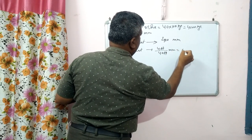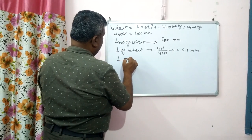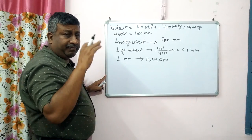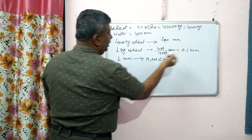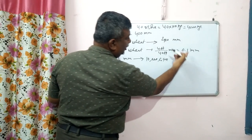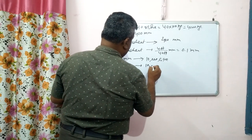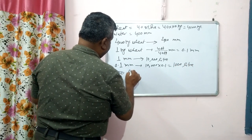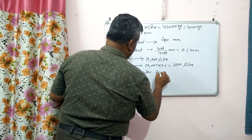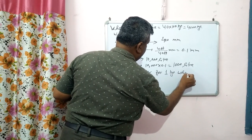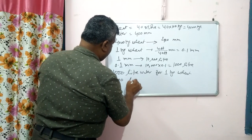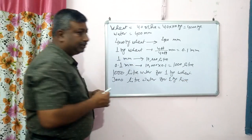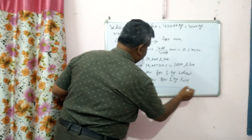So 1 kg of wheat requires 400 divided by 4,000 mm, which is 1/10, that is 0.1 mm. And we know that 1 mm of water over 1 hectare area is equivalent to 10,000 liters, as we have just proved. So 0.1 mm is equivalent to 10,000 × 0.1 = 1,000 liters. This means 1,000 liters of water is required to produce 1 kg of wheat.